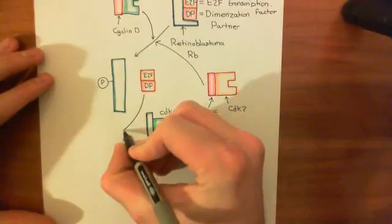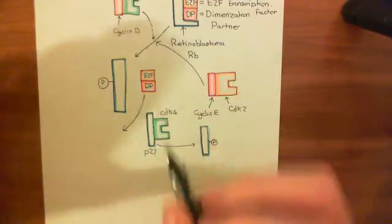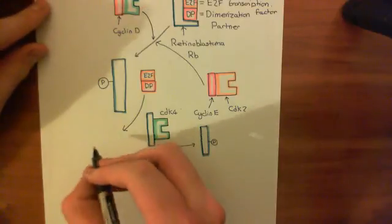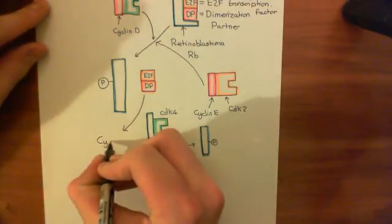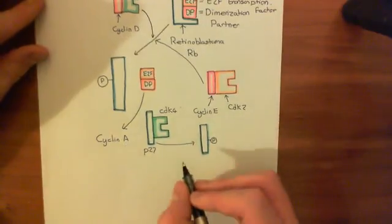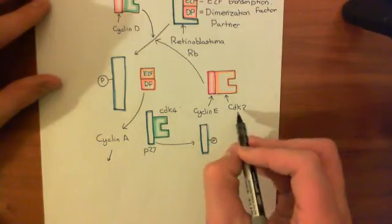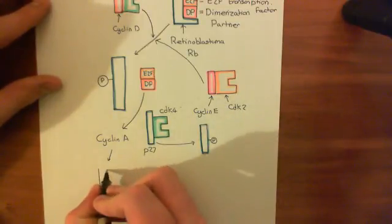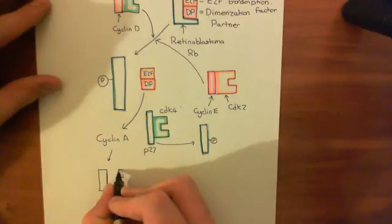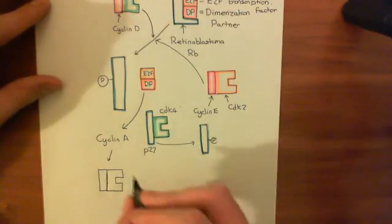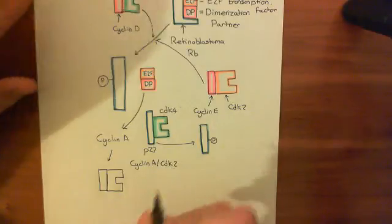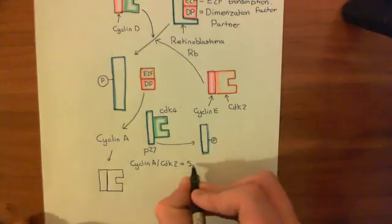The E2F-DP complexes move the cell from G1 to S phase by increasing the expression of cyclin A. They bind to the promoter region known as an E2F box and increase expression of cyclin A. Cyclin A then associates with cyclin-dependent kinase 2 to form cyclin A CDK2 complexes. These cyclin A CDK2 enzymes are responsible for most of what happens in S phase, and are also known as the S CDK.